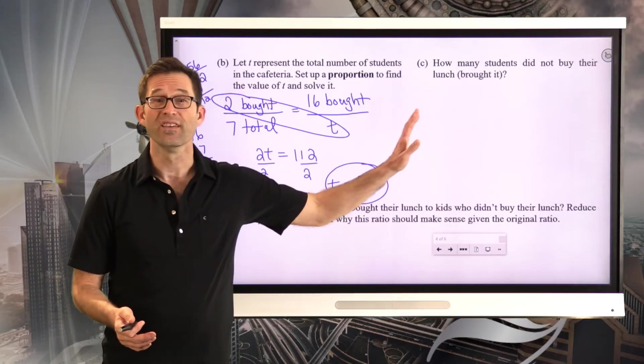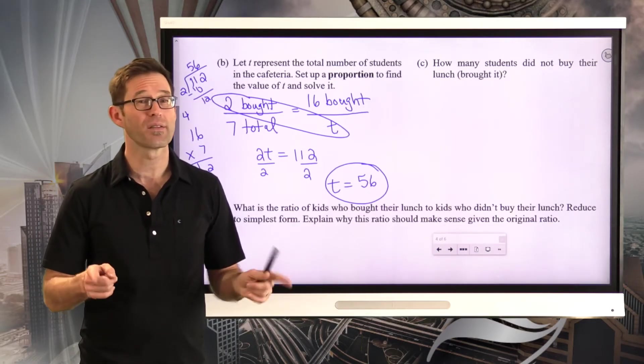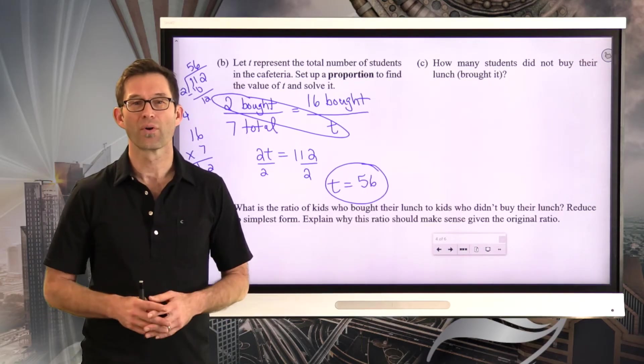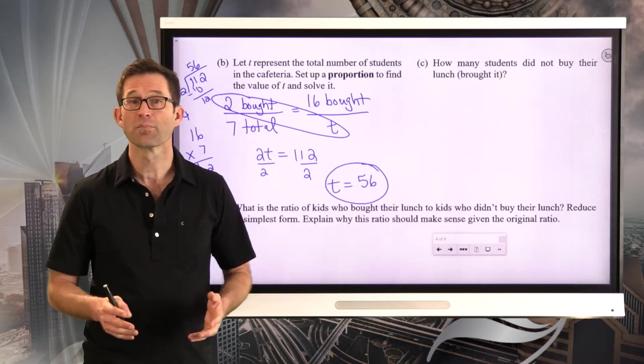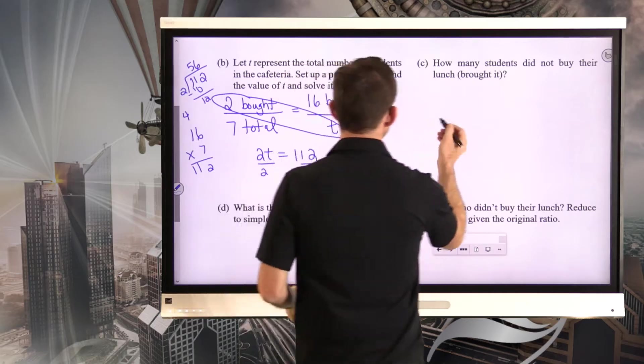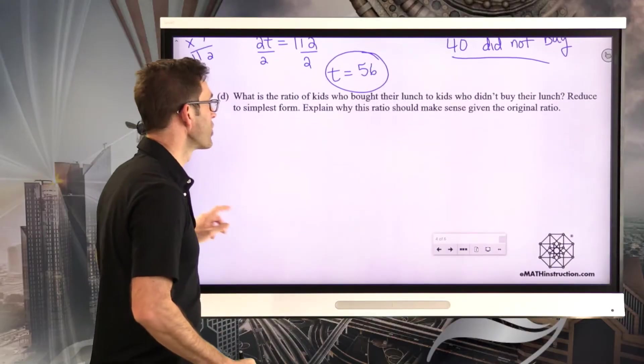Letter C is extremely easy. How many students did not buy their lunch? So in other words, they brought their lunch. Well, this is pretty easy. There are a total of 56 students. 16 of them bought their lunch. So this is simply a subtraction problem. 56 minus 16, 40 students did not buy. That's easy. And really that's just to set us up for letter D.